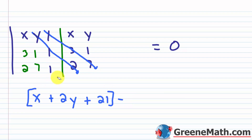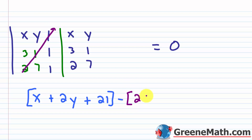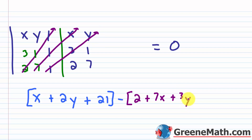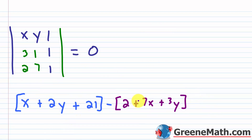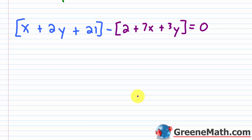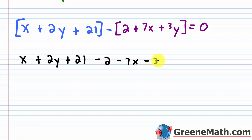Now multiplying up the diagonals: two times one times one is 2; seven times one times x is 7x; and one times three times y is 3y. So the second part in brackets is [2 + 7x + 3y]. The full expression is (x + 2y + 21) minus (2 + 7x + 3y) = 0. Distributing the negative: x + 2y + 21 − 2 − 7x − 3y = 0. The brackets are important so you don't make a sign mistake.